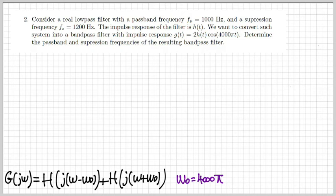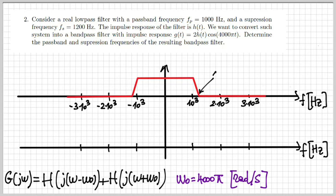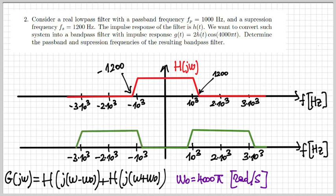Let's always recall that omega 0 is 4000 pi in our case. So let's draw an expression for this now. So this is g of j omega, just to recall it. So I want to draw the original filter h of t, its Fourier transform, which is h of j omega, and I've drawn it in red. So as you can see, the passband frequency is 1000 hertz or one kilohertz. And then there's a suppression at 1200. And what about g of j omega? Well, it's going to be two replicas of h of j omega shifted by plus and minus omega 0.